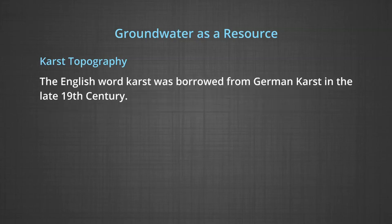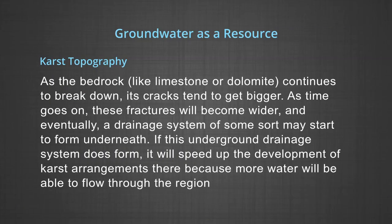The English word karst was borrowed from German karst in the late 19th century. The development of karst occurs whenever acidic water starts to break down the surface of bedrock near its cracks or bedding planes. As the bedrock like limestone or dolomite continues to break down, the cracks tend to get bigger. As time goes on, these fractures will become wider and eventually a drainage system may start to form underneath. If this underground drainage system does form, it will speed up the development of karst because more water will be able to flow through the region.